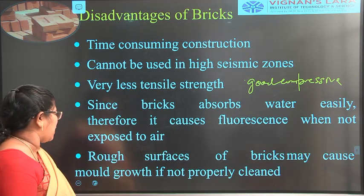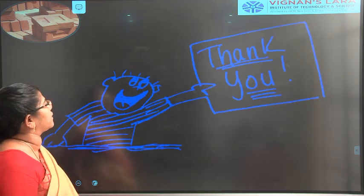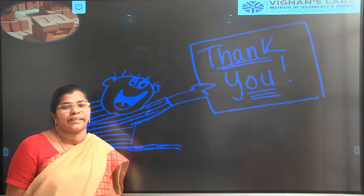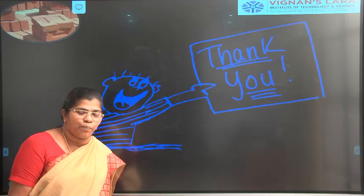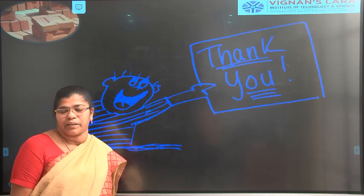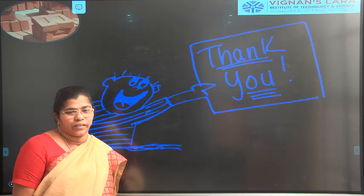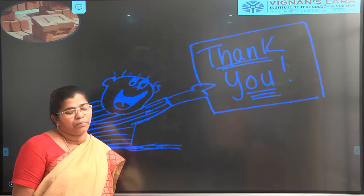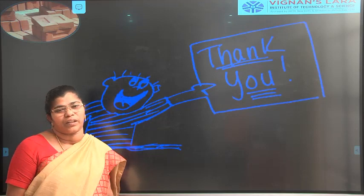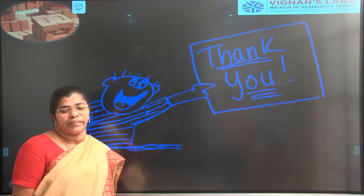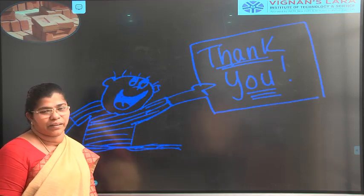In this class we saw the various types of bricks and their compositions, the four manufacturing processes — preparation of clay, molding, drying, and burning — and the uses and disadvantages of bricks. Bricks are used in buildings, bridges, foundations, arches, pavements, footpaths, roads, drains, tunnels, and boundary walls. In the next class we will see the classification of bricks.